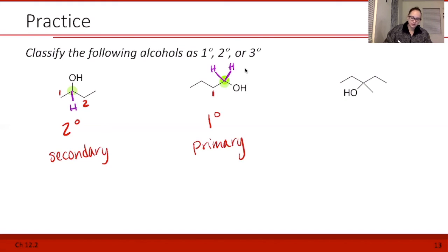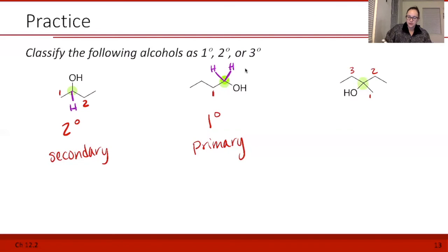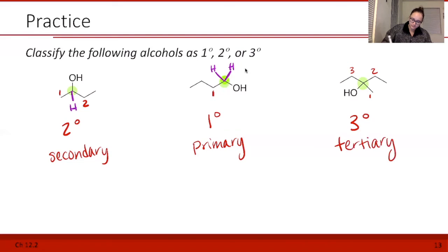Our last one — we have our alcohol attached at this carbon here. I'm going to fill in my hydrogens. Looking at this carbon, it already has four bonds showing, so we don't need to draw in any hydrogens. Let's number them: one, two, three things attached to that carbon that are not the oxygen. So this is tertiary. That's how you classify alcohols — keep practicing, and I'll see you next time.